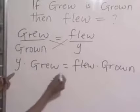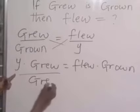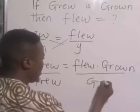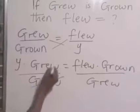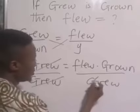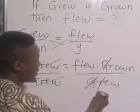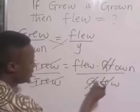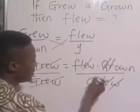So, to get your y, divide both sides by grew. Divide both sides by grew, so that grew will cancel grew. Here, g will cancel g, r will cancel r, e will cancel e, w will cancel w.